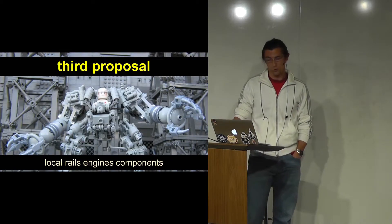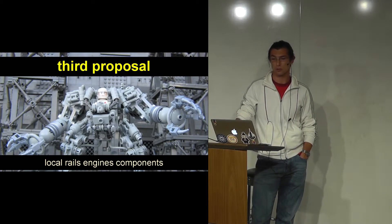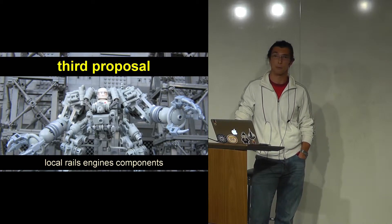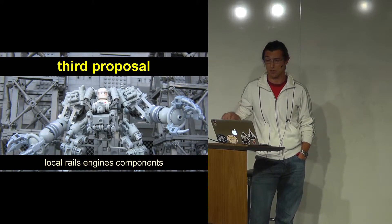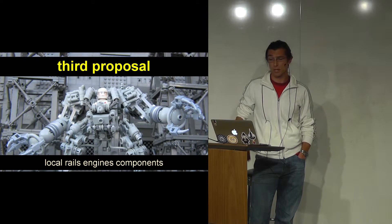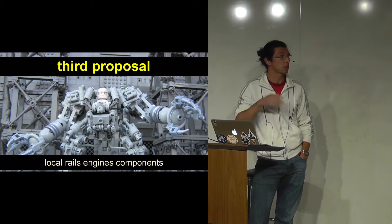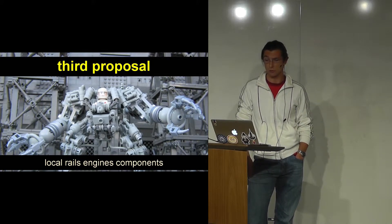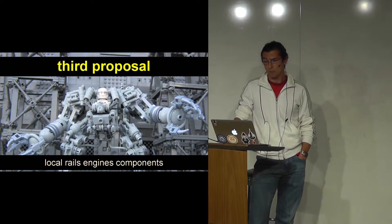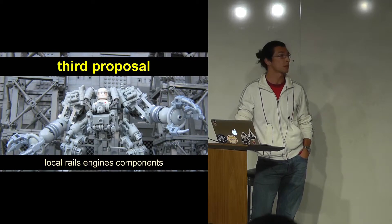The third proposal was to use local Rails engine components — to identify and separate relevant components from the application and move them into Rails engines. This solution would diverge a little from regular Rails applications. I've done this before and it felt like a solid stepping stone if later we wanted to go full service-oriented architecture.